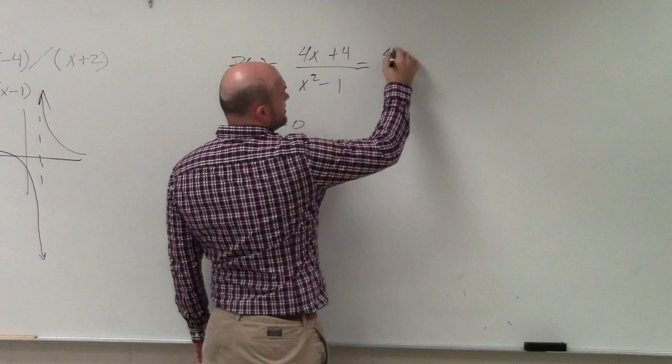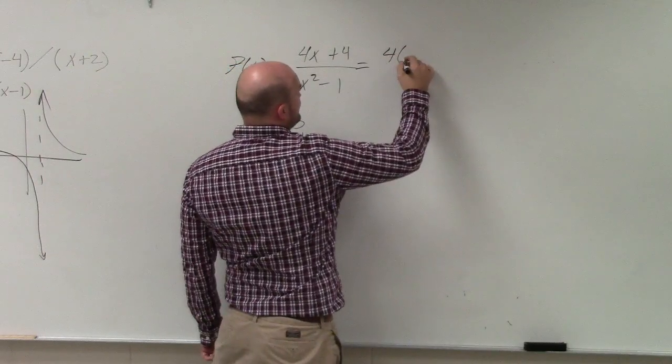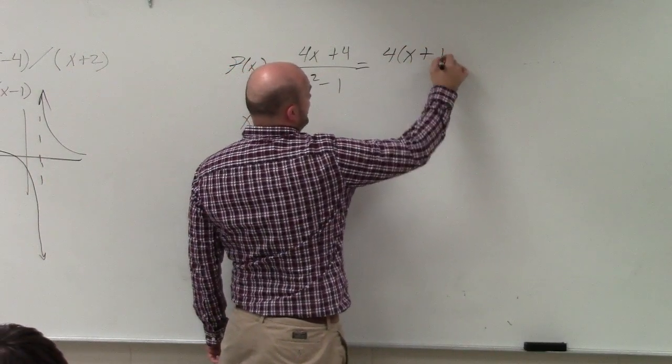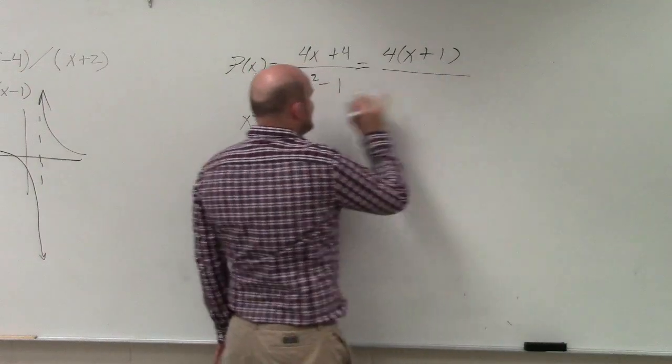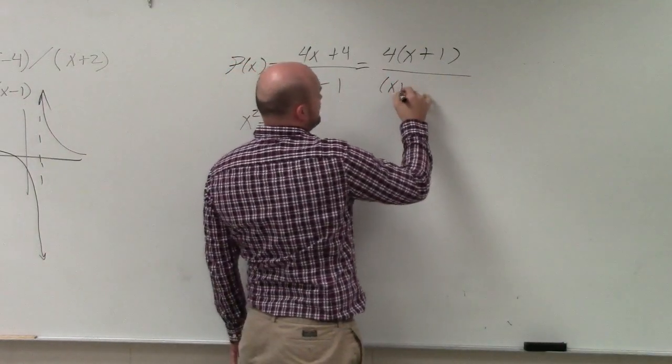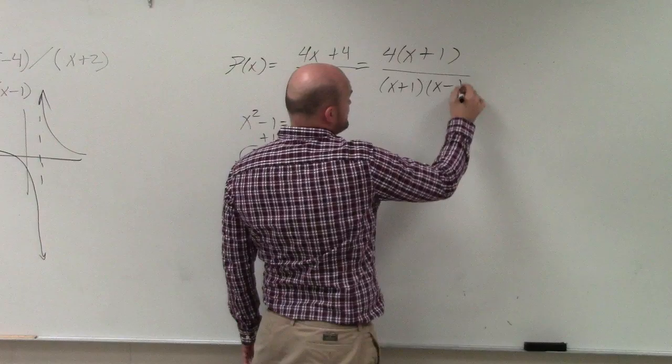So write it like this, because this is what I want you guys to see. If you factor this out, that's going to be an x plus 1. Factor denominator is x plus 1 times x minus 1.